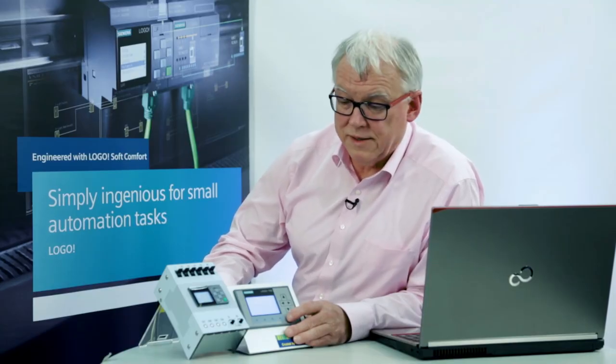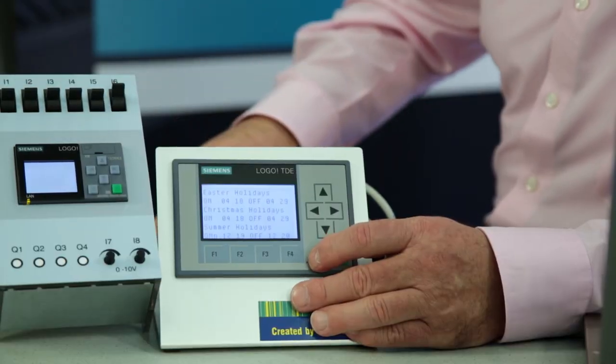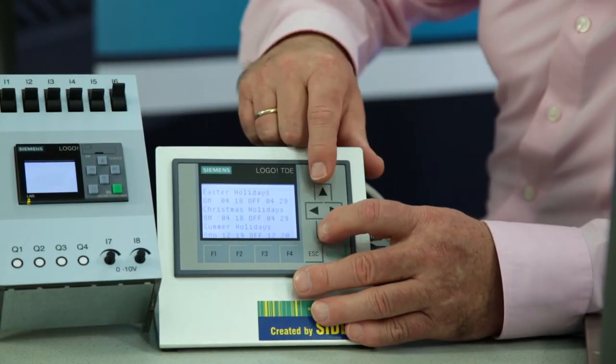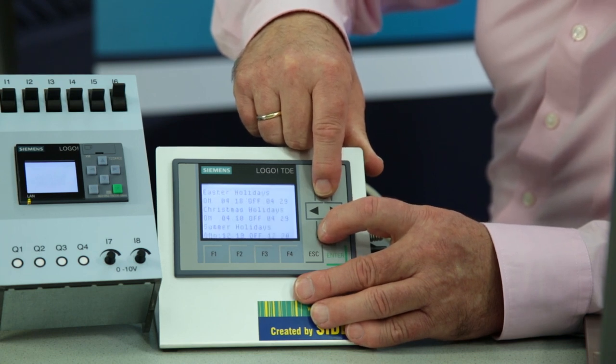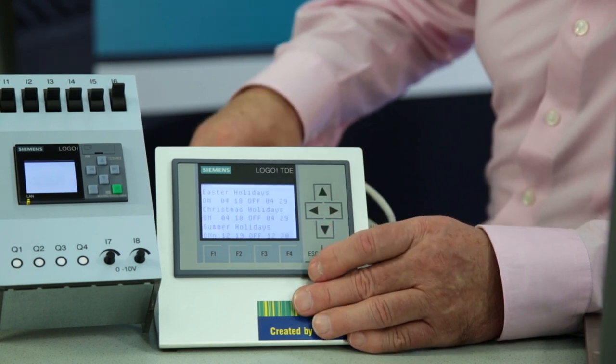The more elegant procedure for changing parameters is by way of the message texts. To do so, I switch on the message texts and use the cursor key to switch back and forth between various message texts.